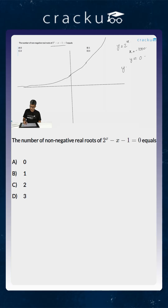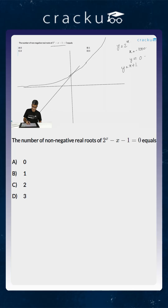And how does y equals x plus 1 look like? It is a simple straight line. When x is minus infinity, it will be minus infinity, and it will continue going like this.